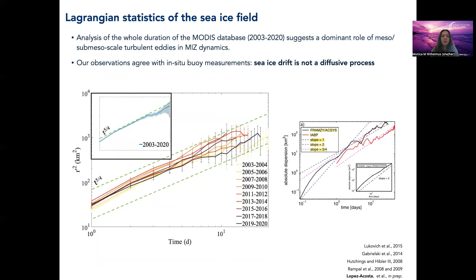We did an analysis of the whole duration of the MODIS database, from 2003 to 2020. What we observed is that all years clearly follow a five-fourths regime. Here you're seeing all the years grouped in different bins, and we consistently observe that five-fourths power law for timescales ranging from 1 to 24 days. We also binned all the observations into a single ensemble and observed the same trend from 1 to 41 days. In marginal ice zones, where meso-to-submesoscale eddies are known to influence surface dynamics, this behavior clearly indicates the effects of hyperbolic or elliptical regions of coherent structures on sea ice drift.